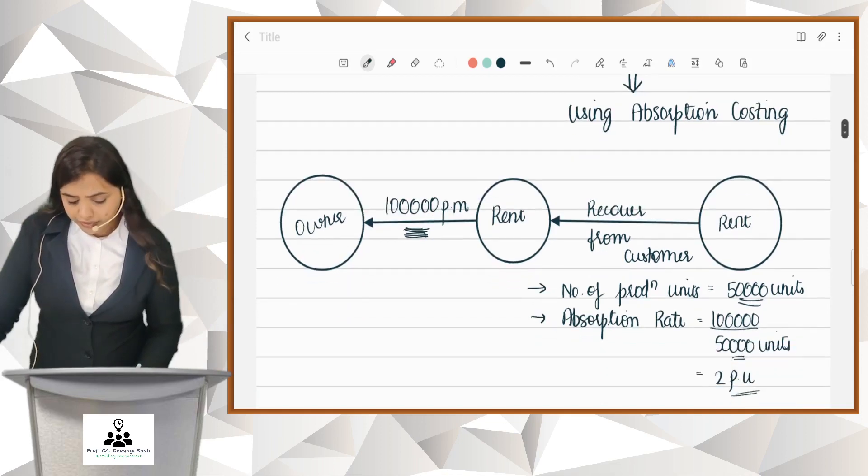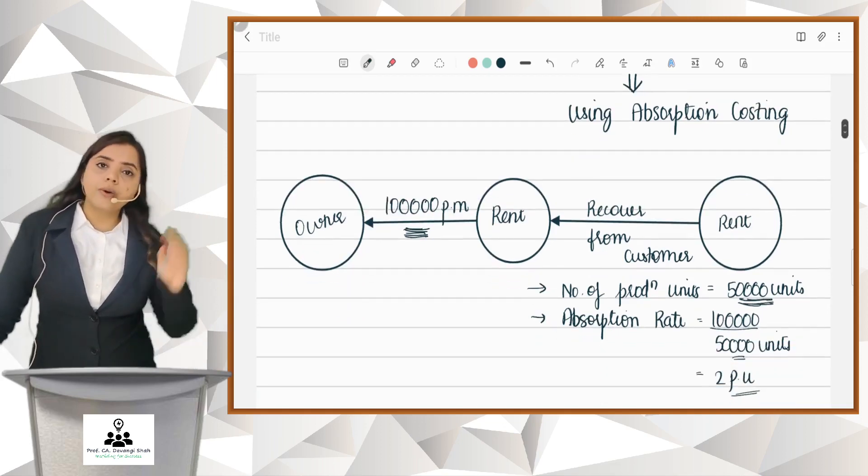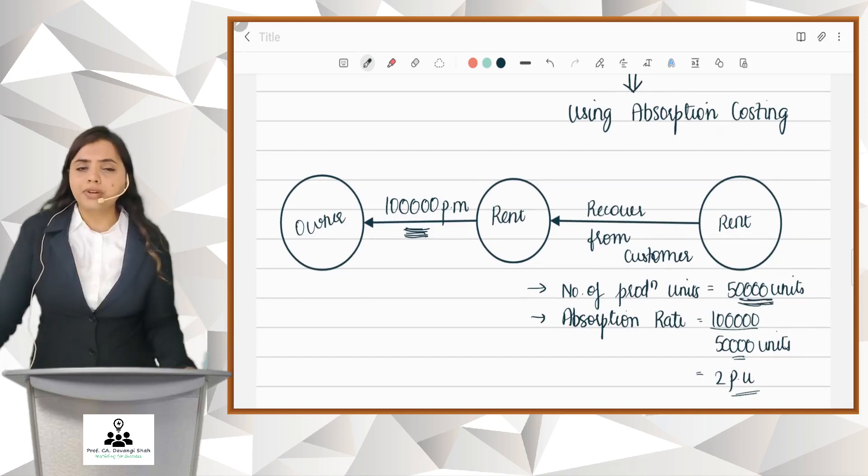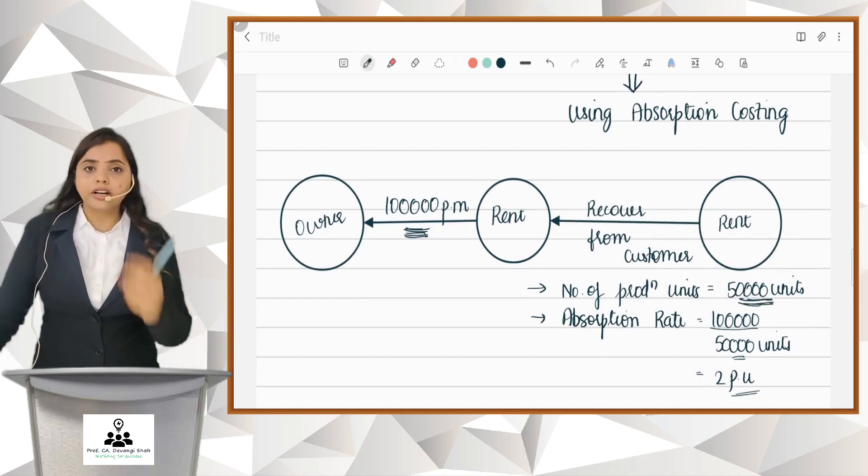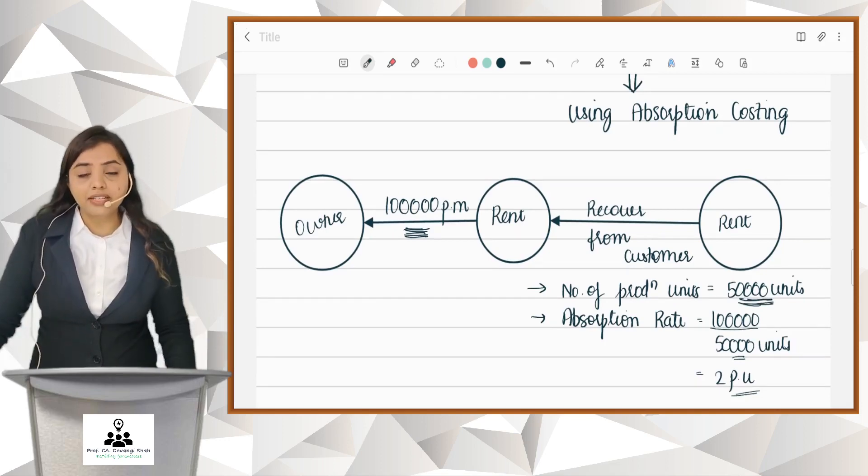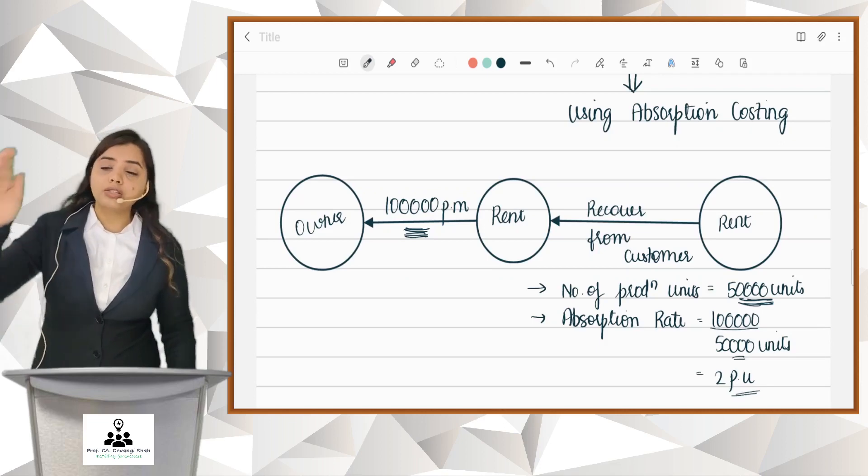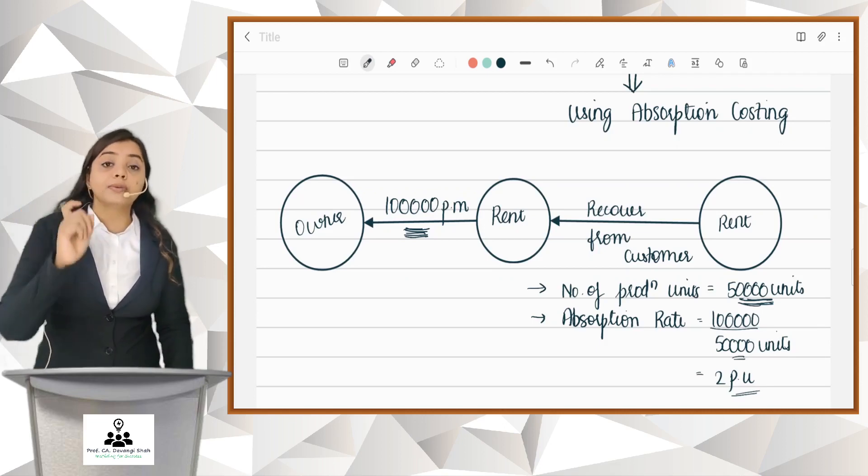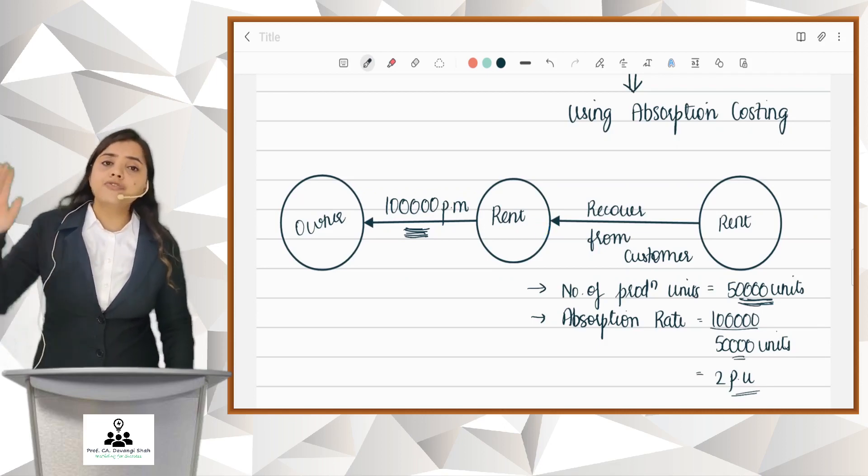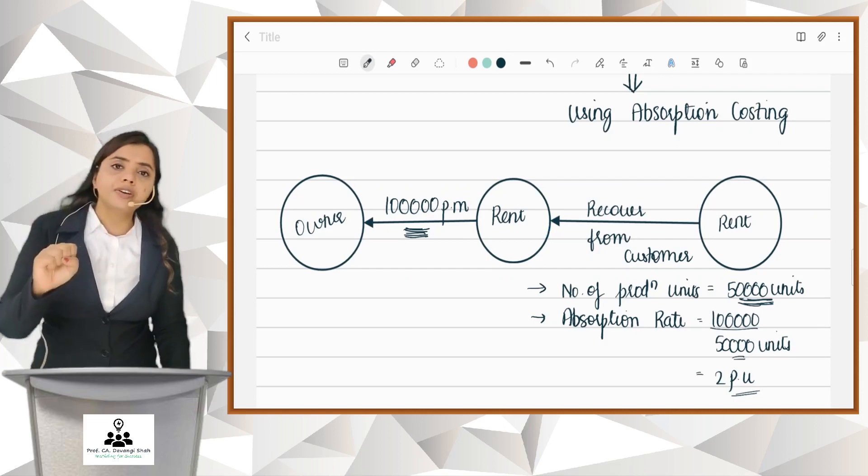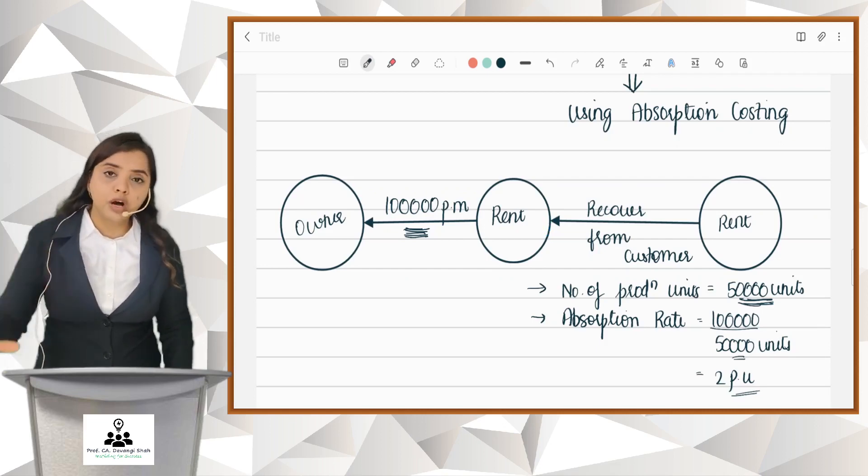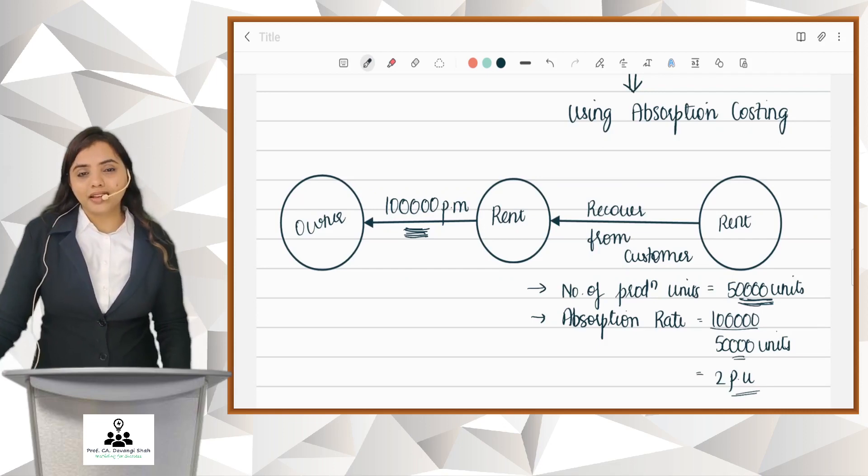I am going to sell 50,000 units, so 1 lakh rent is to be recovered from the 50,000 units that I sell. So it comes to 2 rupees per unit. That 2 rupees per unit is to charge to every unit, and that 2 is called absorption. That is a fixed overhead amount that is to be recovered from every unit, that is to be absorbed in every unit.